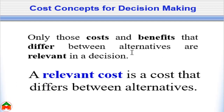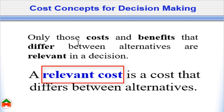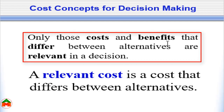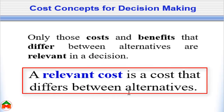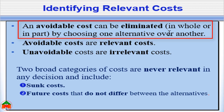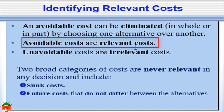Whenever we are taking a decision, we have to consider only the relevant cost, because only the relevant cost should be used in differential analysis. Only those costs and benefits that differ between alternatives are relevant in a decision. A relevant cost is a cost that differs between alternatives. Avoidable costs can be eliminated in all or part by choosing one alternative over another, and avoidable costs are known as relevant costs.